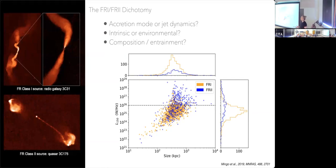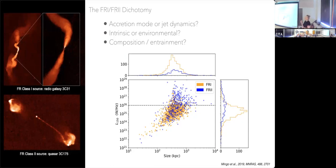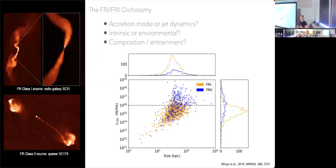This morphological distinction has been in the literature since the 1970s. The most exciting thing originally was that all Fanaroff-Riley Class II objects tend to be at high luminosities. There was a question of what causes that luminosity break associated with the morphology distinction. Is it intrinsic to the source? Is it something to do with accretion mode or jet dynamics? Is it environmental? Is it a combination of all these things? Even though we've been talking about this since the 1970s, we still don't know.